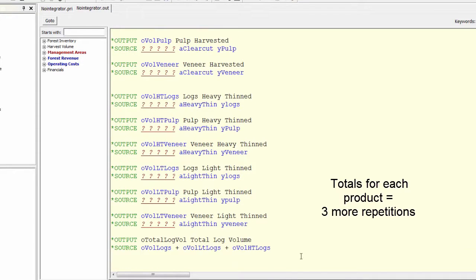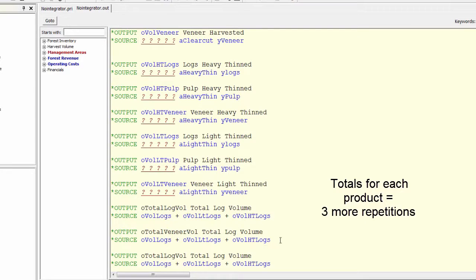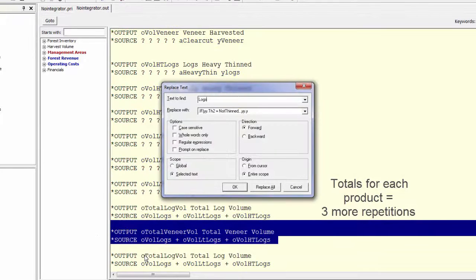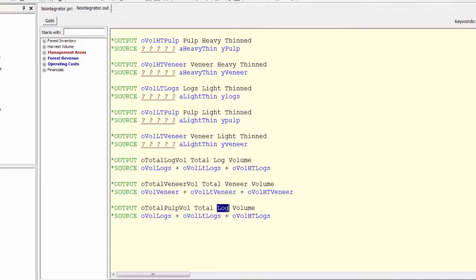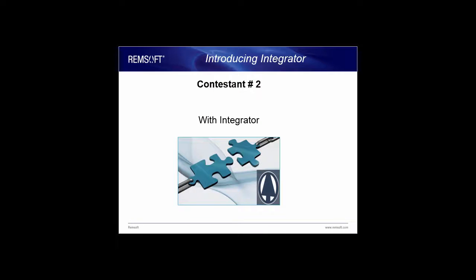With that done, he also needs to build outputs for the three product volume totals. Hugo finishes in 4 minutes and 14 seconds, thinking he made pretty good time, but wary of the edge Kevin may have with the integrator.